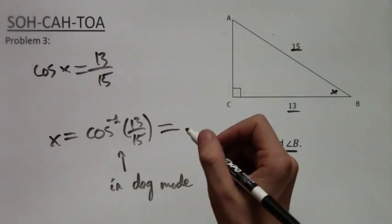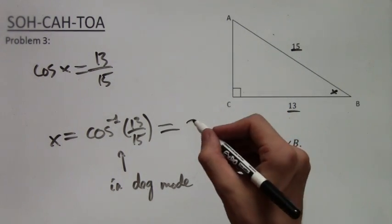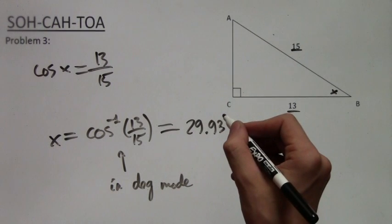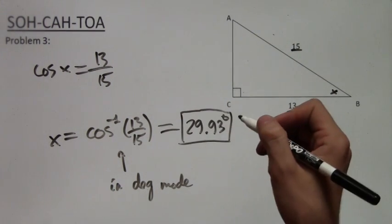Now final reminder, you always want to be in degree mode, and when you plug in cosine inverse of 13 over 15, you'll get 29.93 degrees. If you got something that's completely different, then you are not in degree mode.